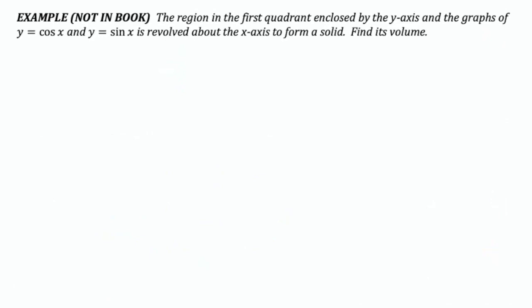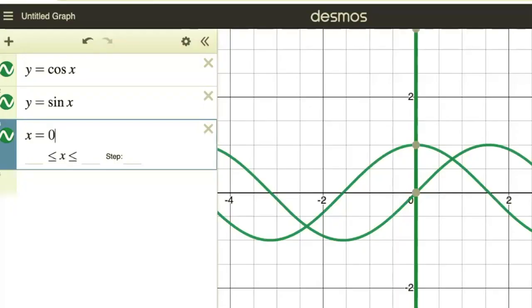Again, I would recommend getting a graph and make sure you're graphing in radians because in calculus we always keep angles in terms of radians. So here's what this graph looks like in Desmos. And because we're looking for the region bounded by the two curves and the y-axis, we're looking at this shape here. And remember, we're going to rotate this around the x-axis.